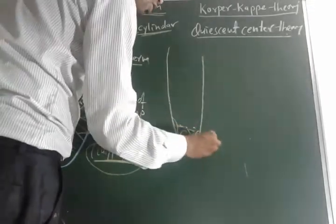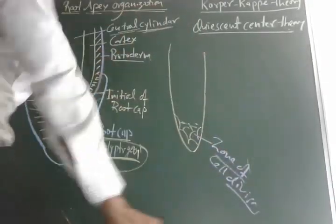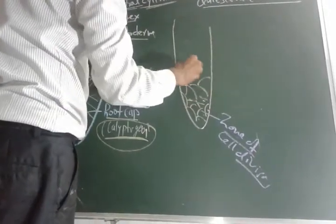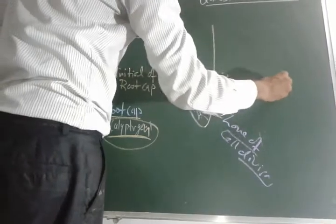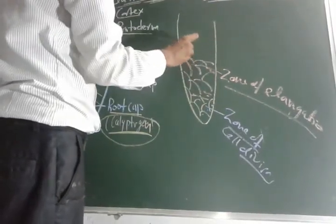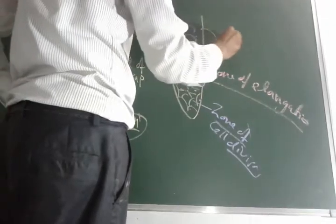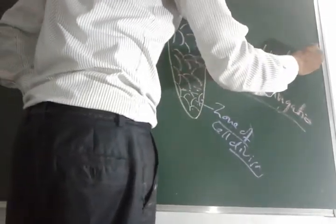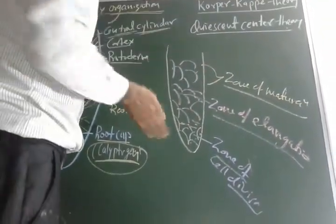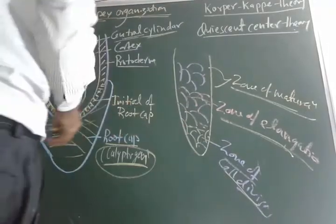The first zone is the zone of cell division, where cells actively divide. The second is the zone of elongation, where the divided cells elongate. The third is the zone of maturation, where cells mature — the protoplasm, nucleus, and other parts all mature. So simply, in this root figure there are three zones: zone of cell division, zone of elongation, and zone of maturation.